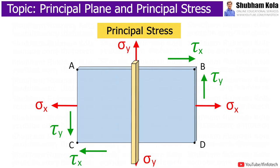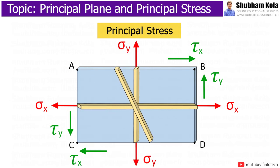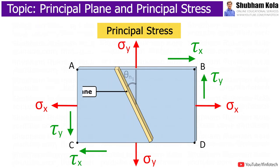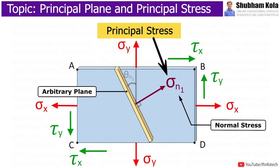Here, the principal plane may be vertical, horizontal, or inclined. So, to understand principal plane, let us say the arbitrary plane is making an angle theta with reference plane. And the normal stress occurring on this arbitrary inclined plane is sigma n.